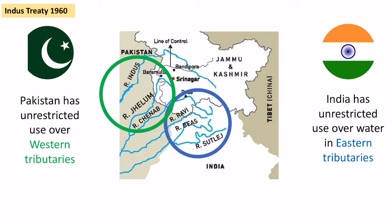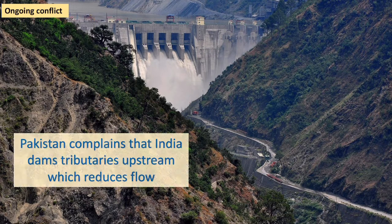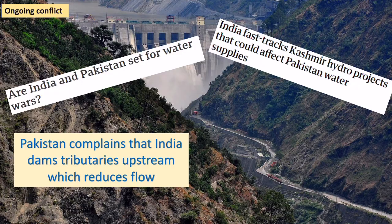The major problem is that because the water goes through India first, Pakistan has complained that India has built dams upstream, which reduces the flow downstream. Since around 2015-16, India has fast-tracked a lot of hydro projects in the Kashmir region, which means Pakistan feels it is getting less water. It's such a significant issue in a water-deprived area that there are fears of water wars potentially breaking out.